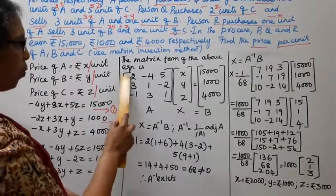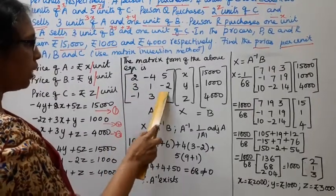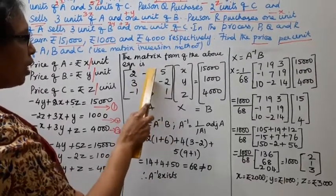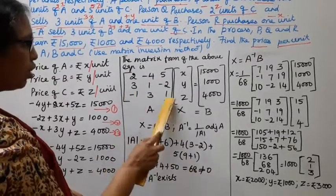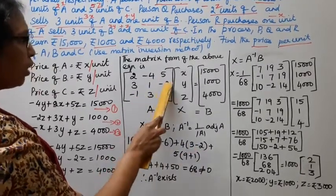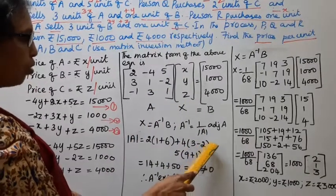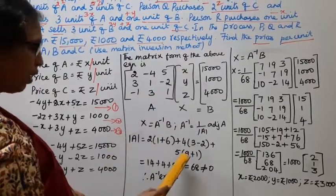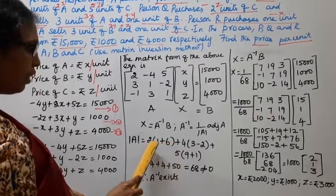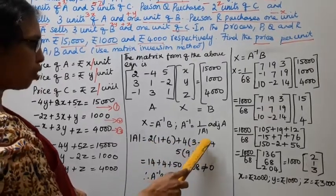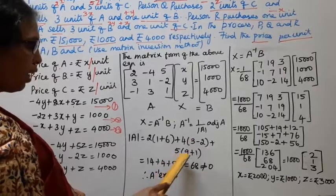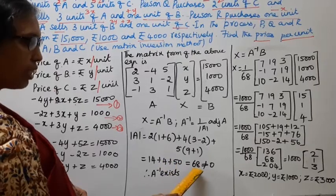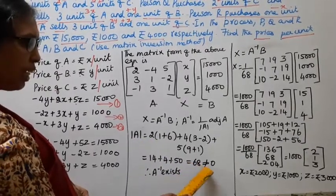Determinant of A. 2 into 1 minus 3 into minus 6 plus 6, 2 into 1 plus 6. Minus 4, minus of minus 4 plus 4, 3 into 1, 3. Minus, minus 1 into minus 2, plus 2. Minus of 2. Plus 5 into 9 plus 1, minus 1 over plus 1. 9 plus 1, 1 plus 6, 7. 7 twos of 14. 3 minus 2, 1. 1 fours of 4. 9 plus 1, 10. 10, 5 of 50. 14 plus 4 plus 50. 68.